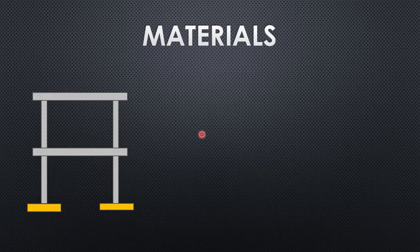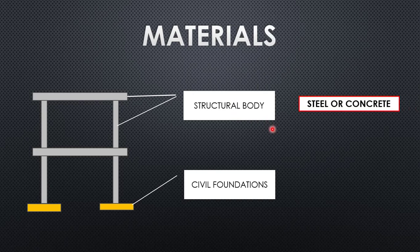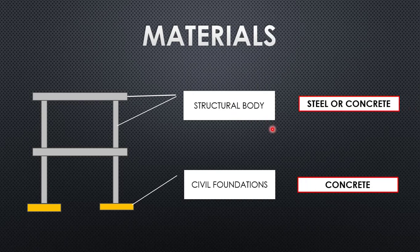Now we'll see the materials of the pipe racks. A pipe rack has two bodies — one is a civil body and the other is a structural body. The structural body is either made of steel or concrete, and the civil body is made of a concrete foundation, known as an RCC reinforced foundation.